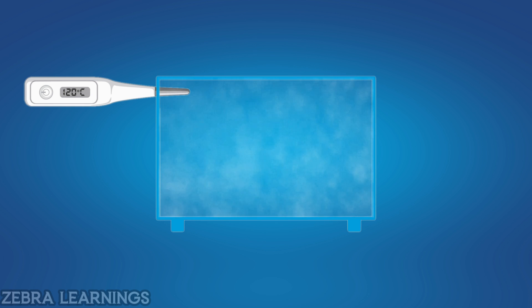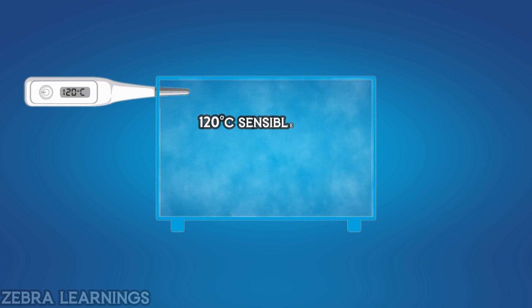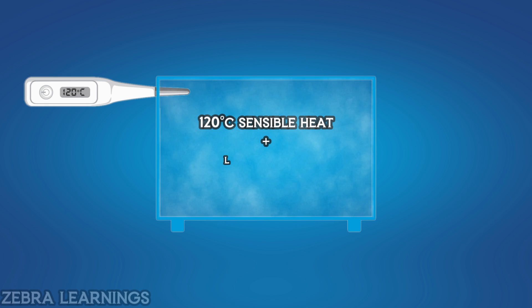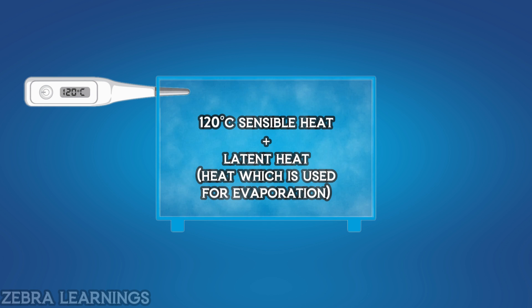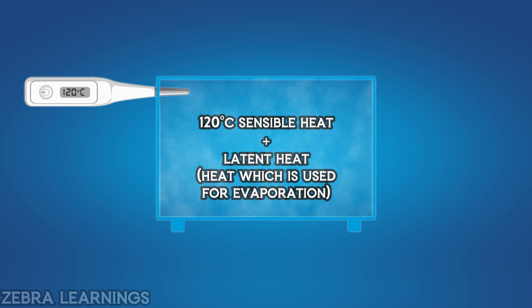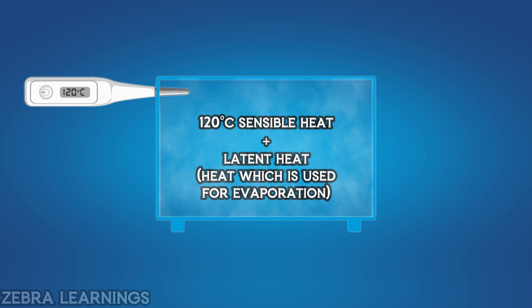At this point, the vapor contains both 120 degrees Celsius sensible heat and latent heat — the heat used to evaporate all of the water. Unlike sensible heat, we cannot directly measure latent heat. Let's understand what happens here in a more technical way.